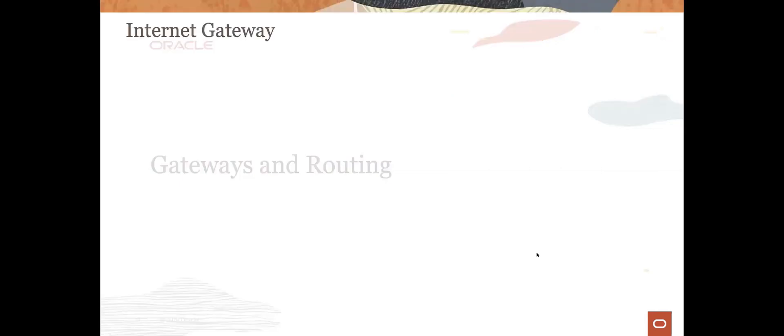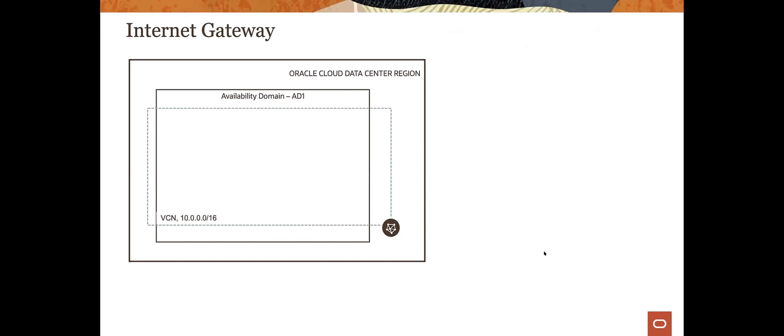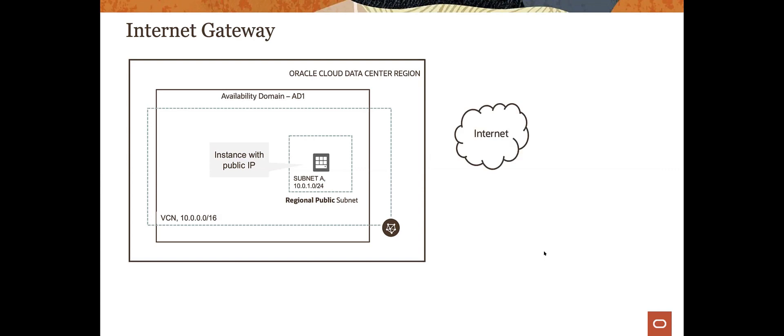Now let's talk about the gateways you need to understand to make your networking work. Starting with the basic diagram: here's our region, availability domain, one VCN created within that. For this example, we'll create a regional public subnet and put one instance with a public IP inside. Now if we want to speak with the Internet — either go out to it or have it come in — we need to enable traffic that goes from this subnet out to and from the Internet.